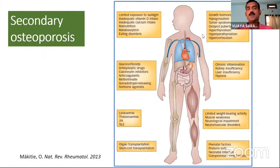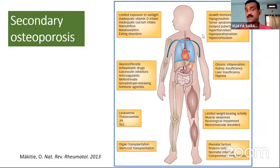Secondary causes of osteoporosis include: nutritional causes such as impaired calcium and vitamin D; hormonal causes such as hypogonadism, hyperthyroidism, hypercortisolism, or hyperparathyroidism; drugs such as glucocorticoids, anti-epileptic drugs, and calcineurin inhibitors; chronic inflammation like rheumatoid arthritis and inflammatory bowel disease; hematological diseases especially leukemias; neuromuscular disorders like Duchenne muscular dystrophy which reduce mobility; and post-organ transplantation.